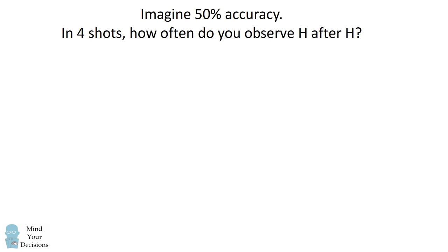So now let's return to basketball. Imagine a player has a 50% accuracy rate so that each shot is like flipping a coin. In 4 shots, how often do you expect to observe a shot being made, a shot hit, after already seeing a hit?